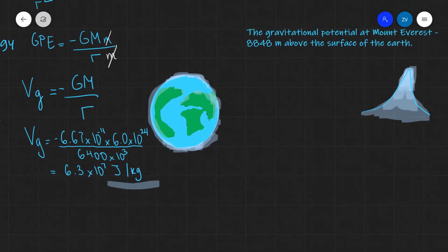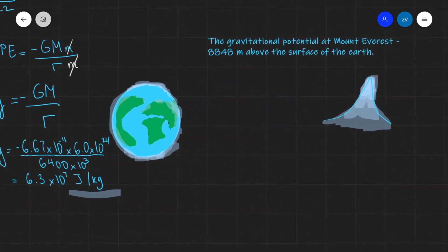Now that we have calculated the gravitational potential on the surface of the Earth, let us calculate the gravitational potential on Mount Everest. We're going to use our formula. Our gravitational potential is equal to minus GM over r. In this case, our distance r will be the distance from the top of Mount Everest all the way down to the center of the Earth.